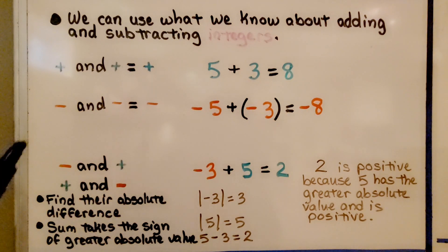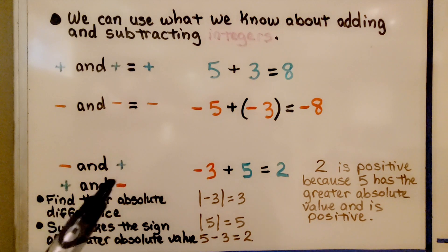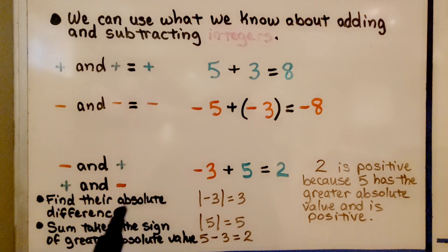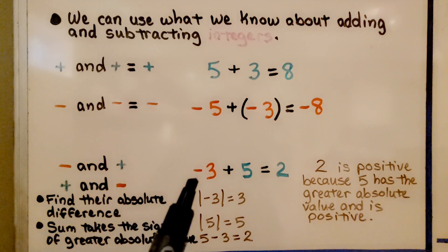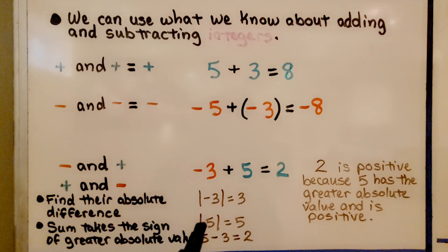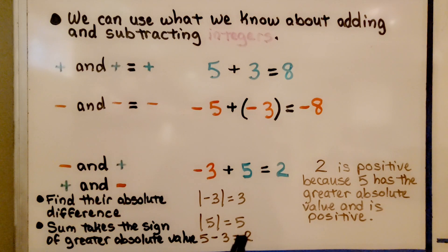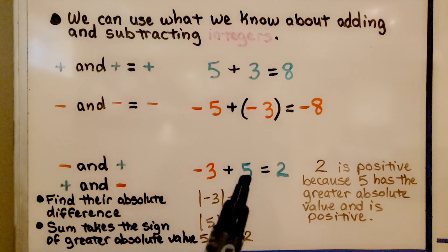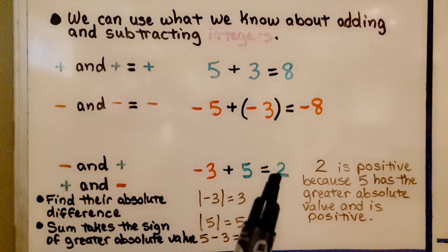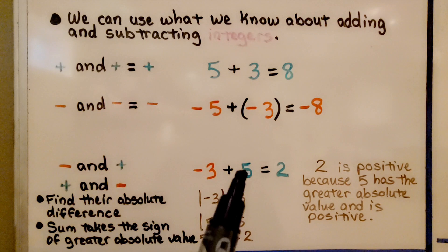If we're adding a negative and positive, or positive and negative, we find their absolute difference. The difference between negative 3 and a positive 5 using absolute value is 2. Our sum is going to take the sign of the add-in with the greater absolute value. We know it's a positive 2 because 5 has the greater absolute value.